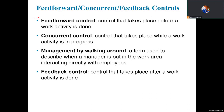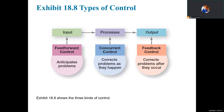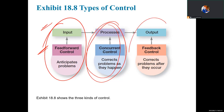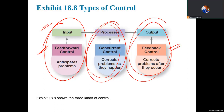Basically, the controls — feed forward, concurrent, and feedback — are used as follows: feed forward is used with planning as inputs; concurrent is used when you are actually processing the work; and feedback, in the output stage, is when things have gone wrong and then you apply feedback control, meaning problems occurred and then you resolve the problem.